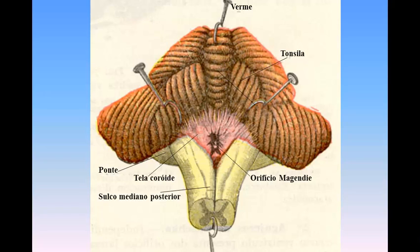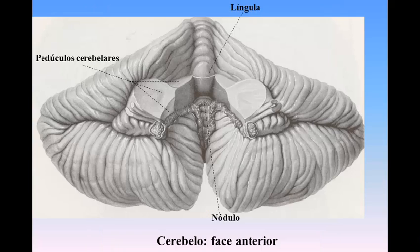The tela choroidea of the fourth ventricle is the name applied to the triangular fold of pia mater which is carried upward between the cerebellum and the medulla oblongata. It consists of two layers, which are continuous with each other in front and are more or less adherent throughout. The posterior layer covers the anterior inferior surface of the cerebellum, while the anterior is applied to the structures which form the lower part of the roof of the ventricle, and is continued inferiorly with the pia mater on the inferior peduncles and closed part of the medulla.